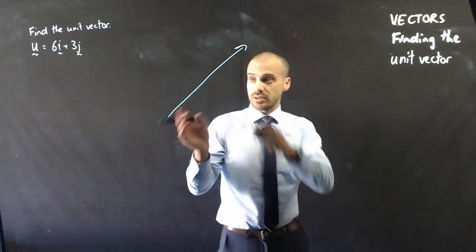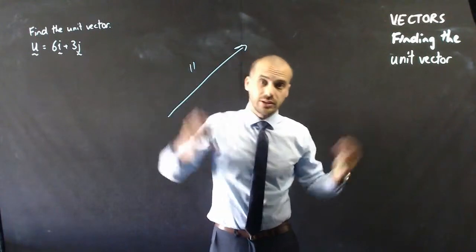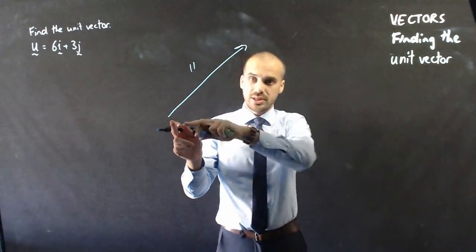Now, this vector, the magnitude might be, I don't know, 11 or something like that. So it might be 11 units long, this particular one.